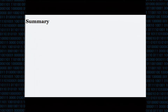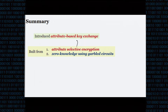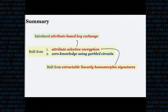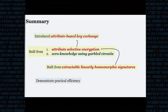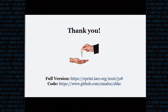To conclude, in this work we introduced attribute-based key exchange and demonstrated a construction of ABKE from attribute-selective encryption and zero-knowledge using garbled circuits. We showed how to construct attribute-selective encryption from extractable linearly homomorphic signatures and demonstrated that this is a practically efficient key exchange. Thank you.